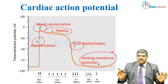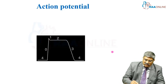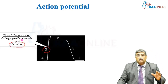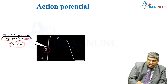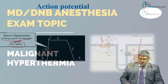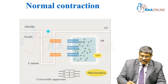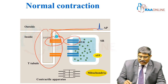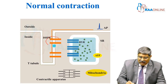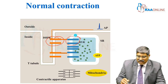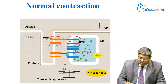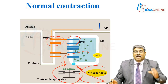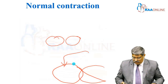Let us look at phase 0 — here there is sodium influx due to opening of the voltage-gated sodium channel. This is the T-tubule dihydropyridine receptor and this is the ryanodine receptor. When an action potential comes, it activates the dihydropyridine receptor, which in turn activates the ryanodine receptor channel. The calcium comes from the sarcoplasmic reticulum into the cytoplasm and acts on actin and myosin to initiate contraction. This is the normal contraction.